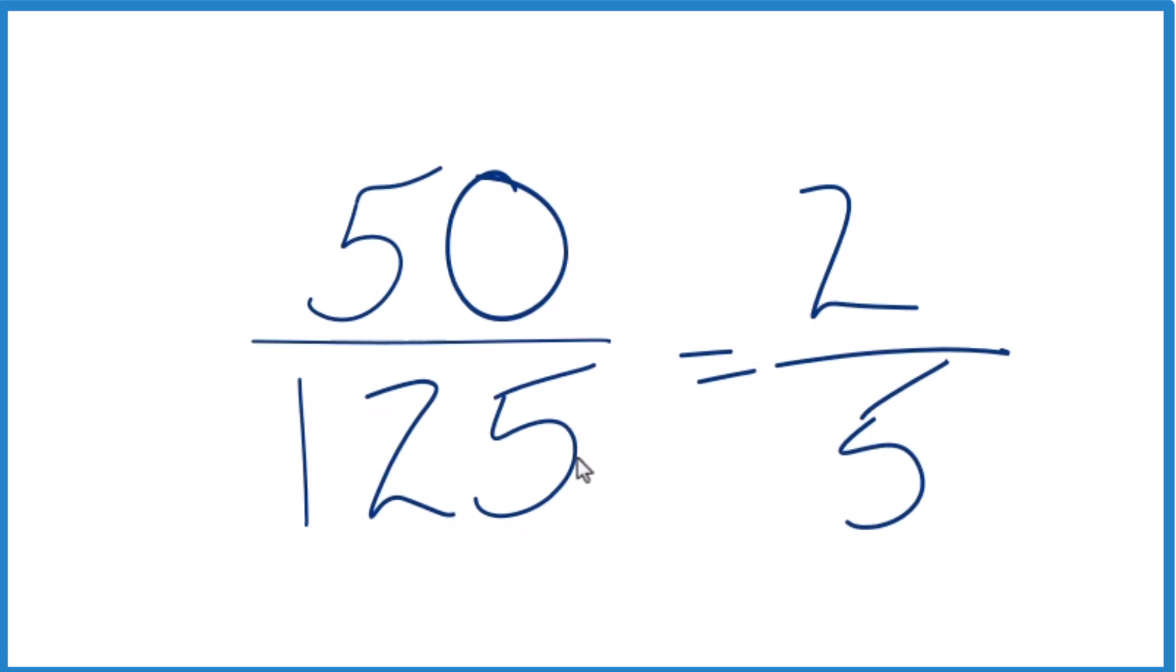So when we reduce the fraction 50/125, we get 2/5. We can't reduce this any further, and these are equivalent.